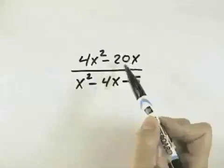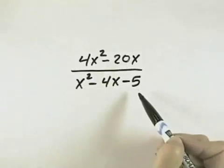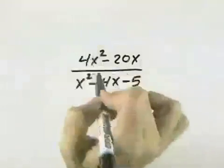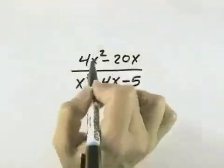Right now, we have two separate terms on top and three on the bottom, but those are not factors. Factors are connected by multiplication. So in order to simplify, we need to try to factor each of these.